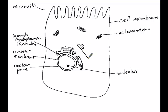Next I'm drawing another folded membrane, which looks a lot like the rough endoplasmic reticulum, except it's smooth. It's further away from the nucleus, and it's the smooth endoplasmic reticulum.